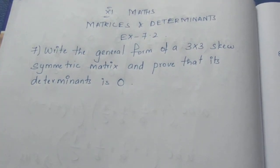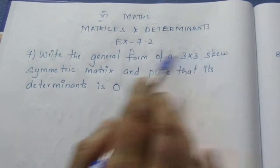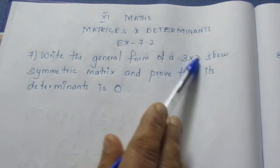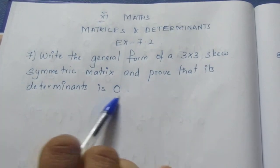Let's see. Write the general form of a 3x3 skew symmetric matrix. How do you write this 3x3 matrix? It is a skew symmetric matrix. Prove that its determinant is 0.